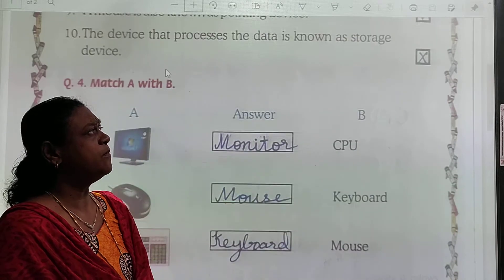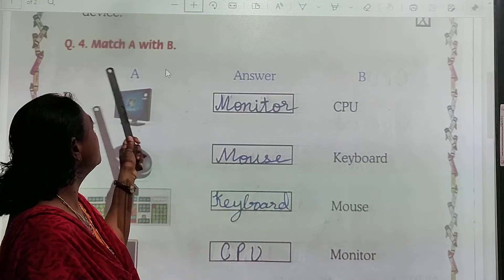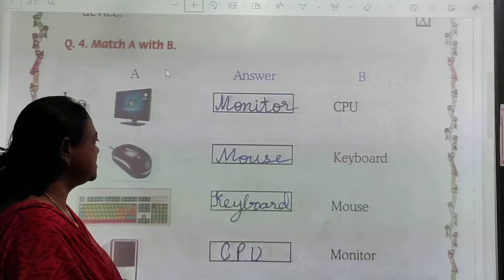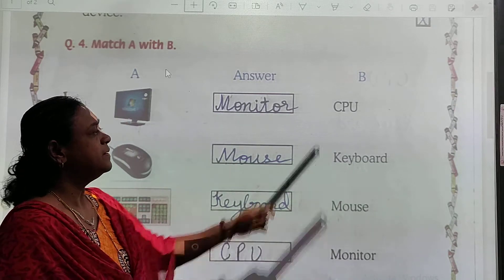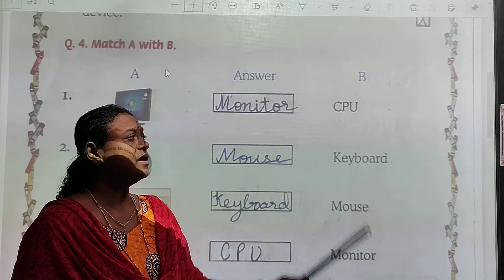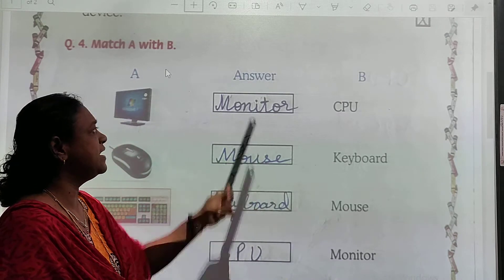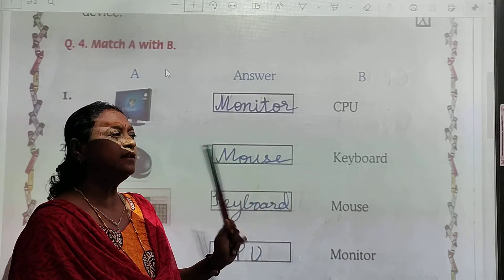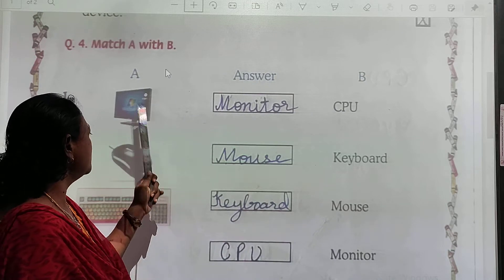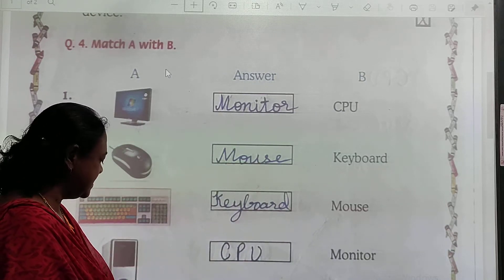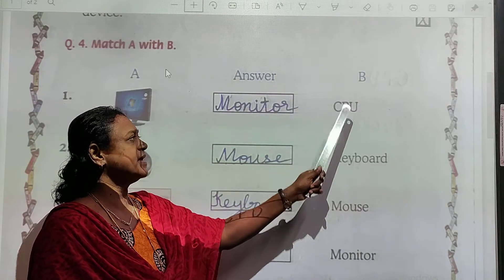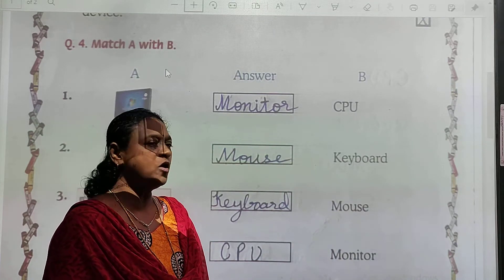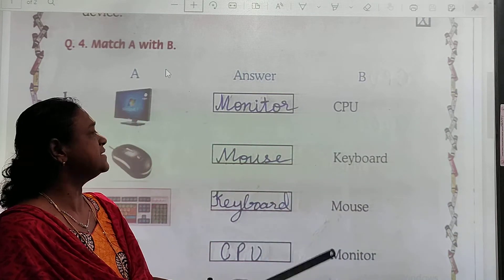Now we will do question number 4: Match A with B. A mein pictures bani hain aur B mein inke names likhe hain. Hum ko correct name box mein likhna hai. You can see here: monitor, mouse, keyboard, and CPU. Yahan pe likha hai CPU, keyboard, mouse, monitor. Toh hume sahi answer likhna hai.